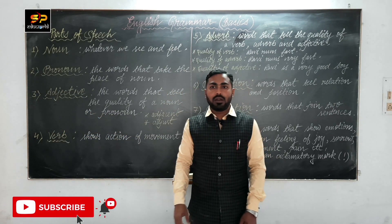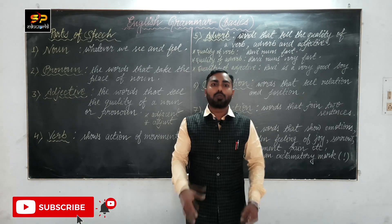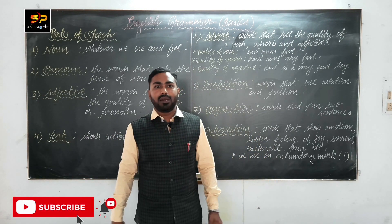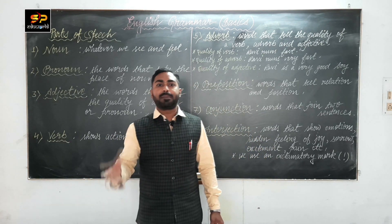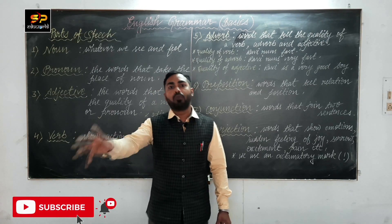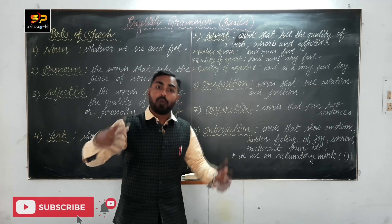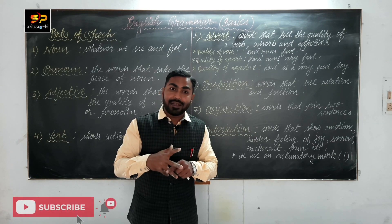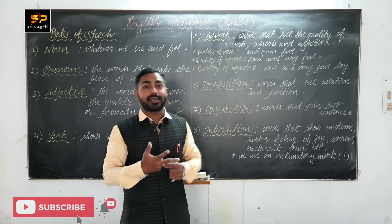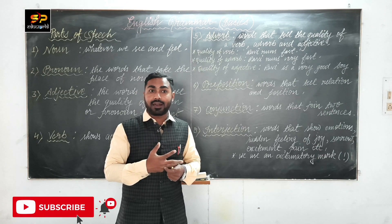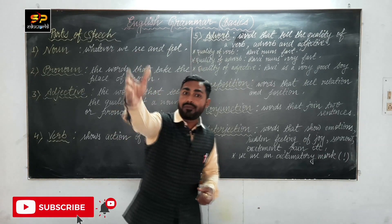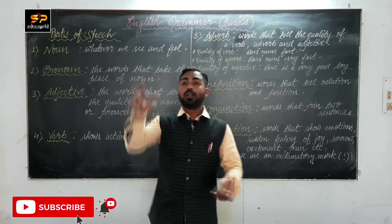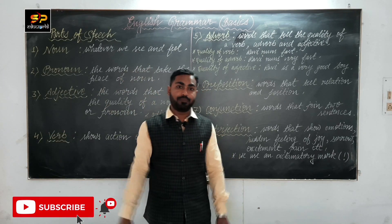Fourth is material noun. Material means which refers to a substance. 'It is a wooden table' — it is made of wood, so wood is a material noun. 'Gold ring' — ring is made of gold, which is a substance. 'Iron window' — iron is a material. So material noun refers to the substance or material from which something is made.